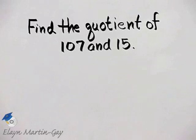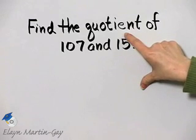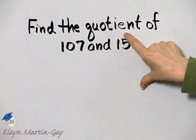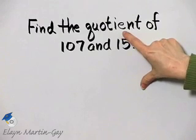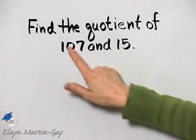Let's find the quotient of 107 and 15. Now remember first what the word quotient means. It means to divide. We must be very careful when dividing and also with subtraction in that order matters.